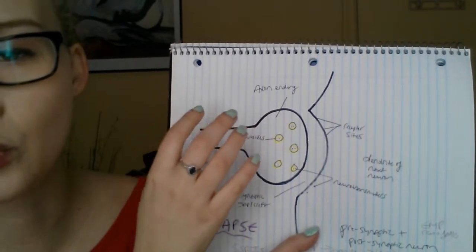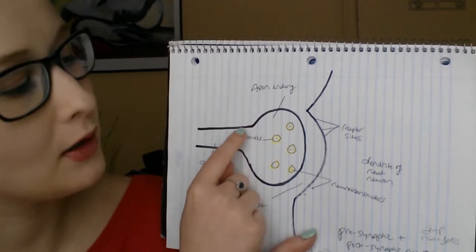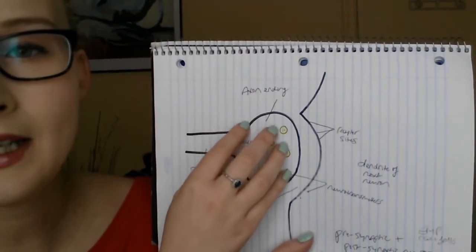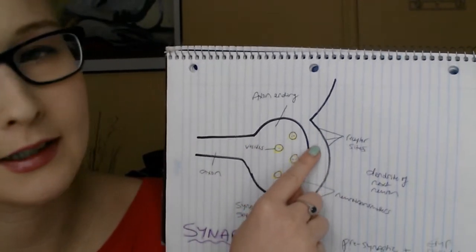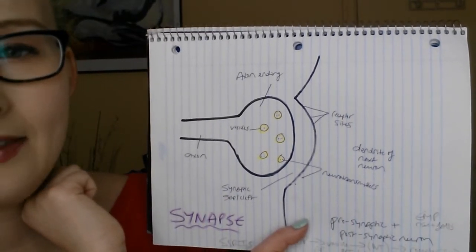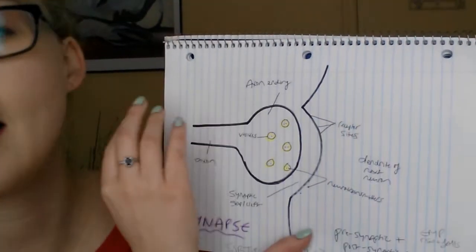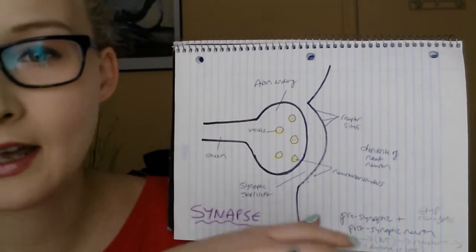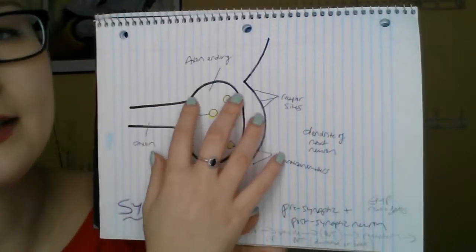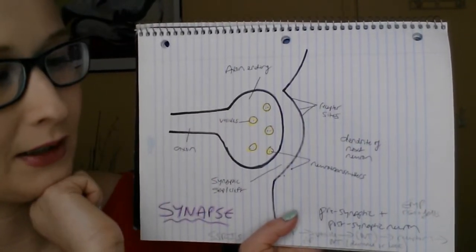When the action potential is reached, tiny structures called vesicles make their way to the edge of the cell. They release neurotransmitter into the synaptic cleft, and some of it binds to receptor sites on the next cell. An action potential is then reached in that cell, continuing along the different cells — communicating not through direct physical contact but through ions traveling and relaying the message.